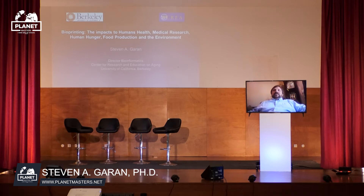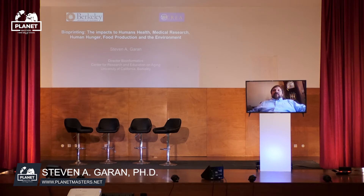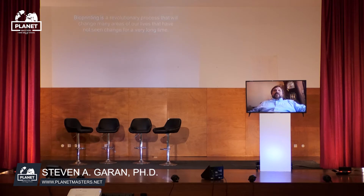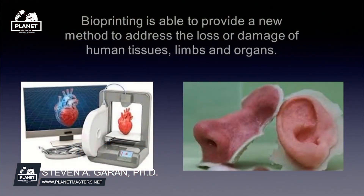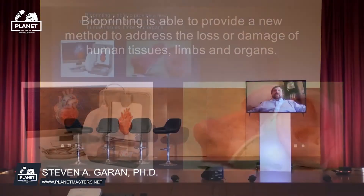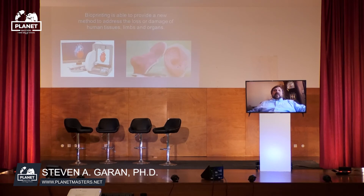Bioprinting is able to provide new methods of addressing the loss or damage of human tissues, limbs, and organs. You can see an example of some things we've printed. The heart in that photo is still in the future, but essentially when the technology has fully matured, you'll be able to print a fully formed adult human heart — and in fact any size for any age of a human being, child or adult.